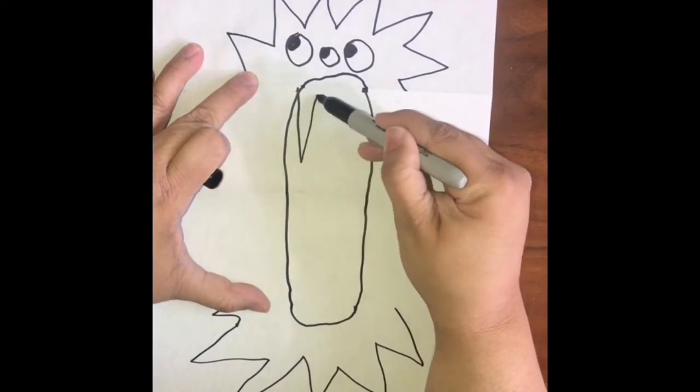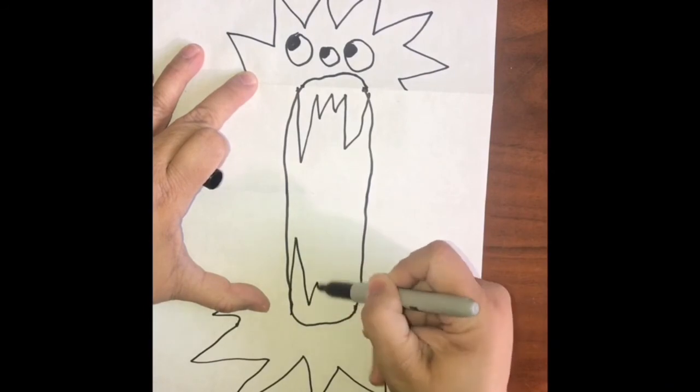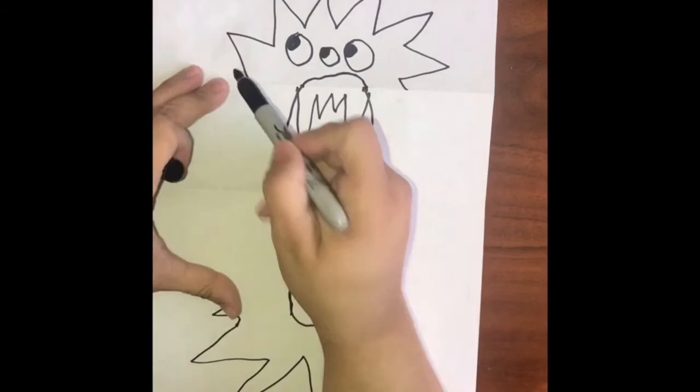Then, you get to be creative. Do you want your creature to be scary and draw sharp, scary teeth? Do you want it to be friendly? You can draw a tongue, a creature inside the mouth.